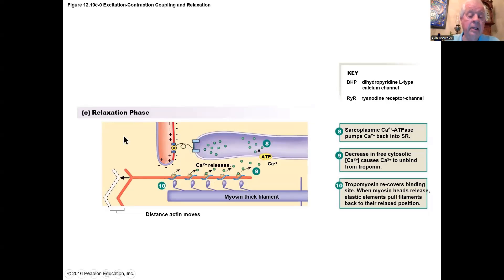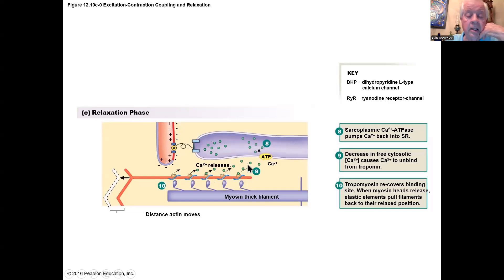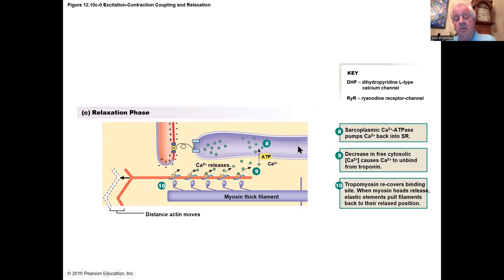After the action potentials stop coming, the gate will close. To get the calcium back into the sarcoplasmic reticulum and allow the muscle to relax, we have to pump it back in using a calcium pump that uses ATP. We need to pump it back because the concentration of calcium in the sarcoplasmic reticulum is much greater than it is out in the cytoplasm of the fiber.